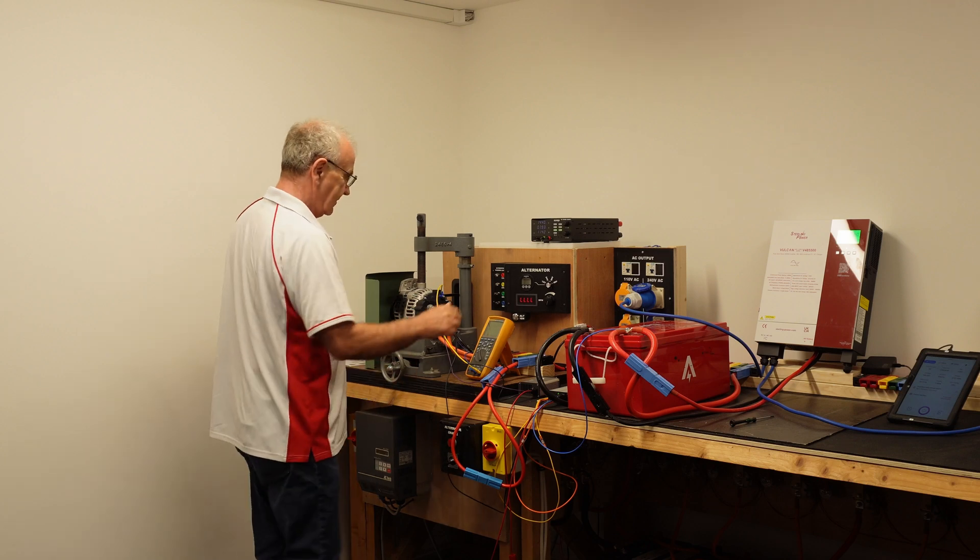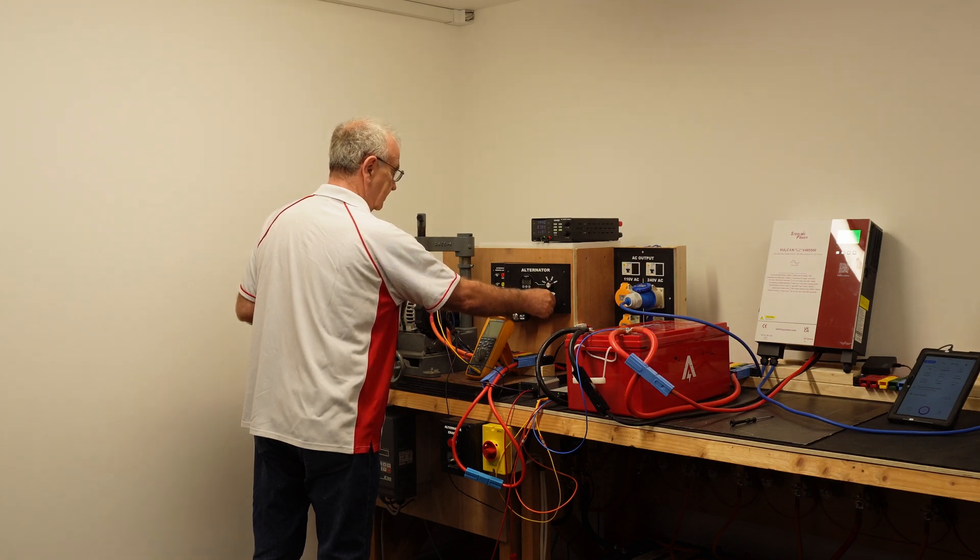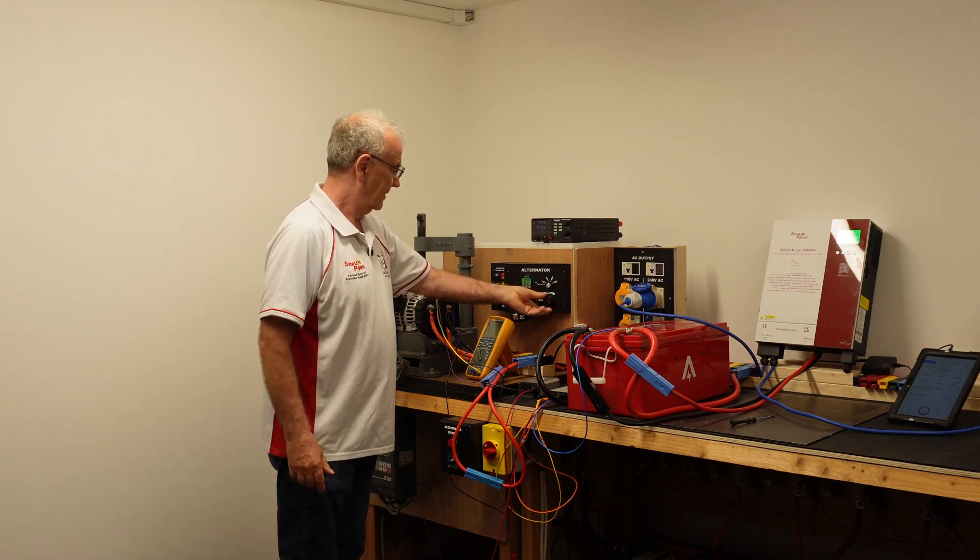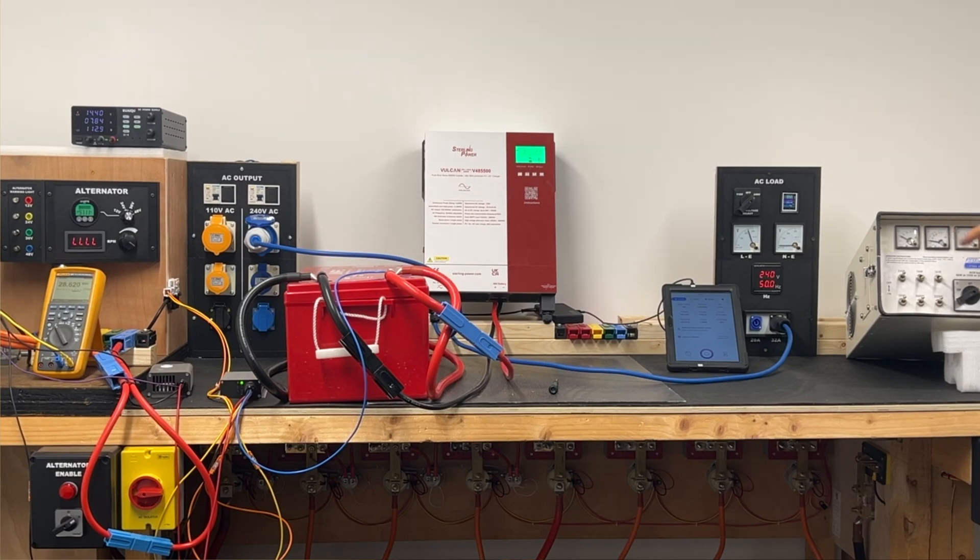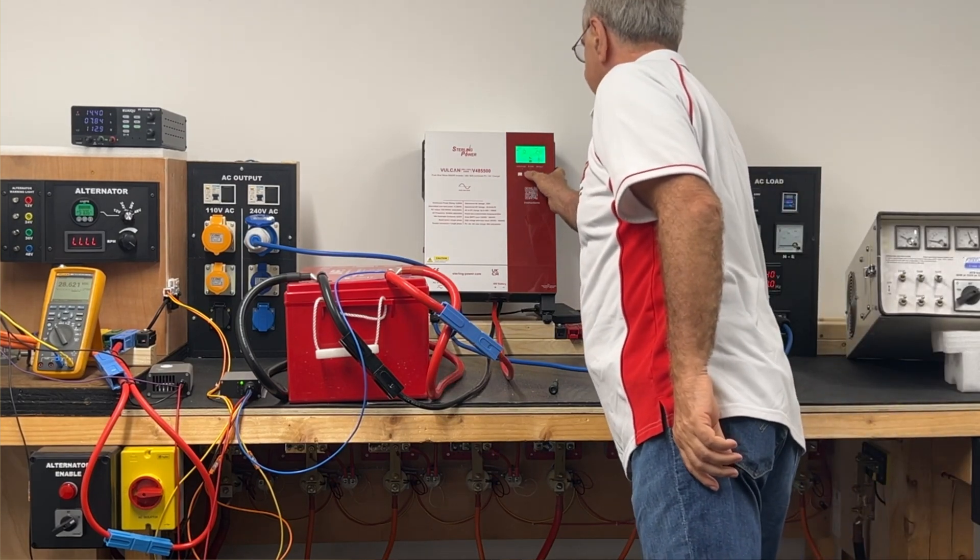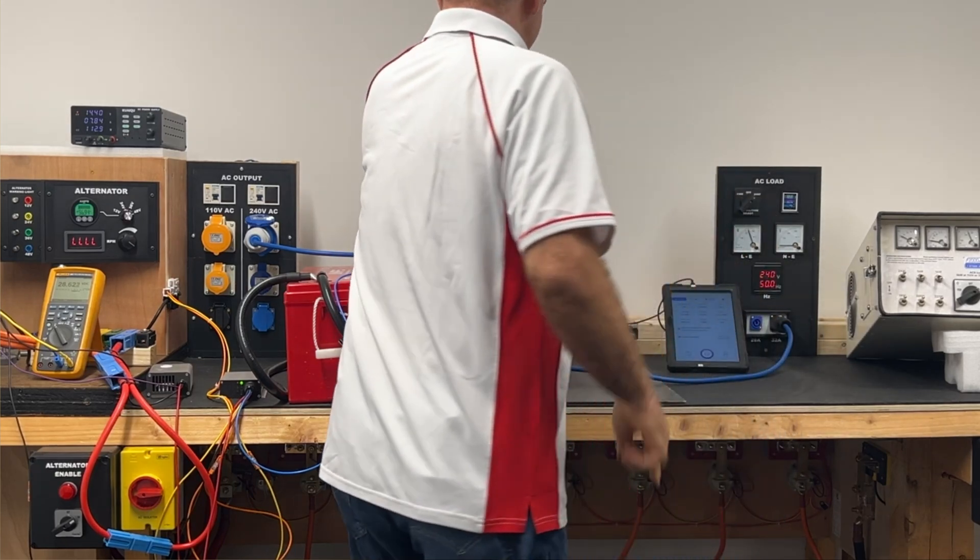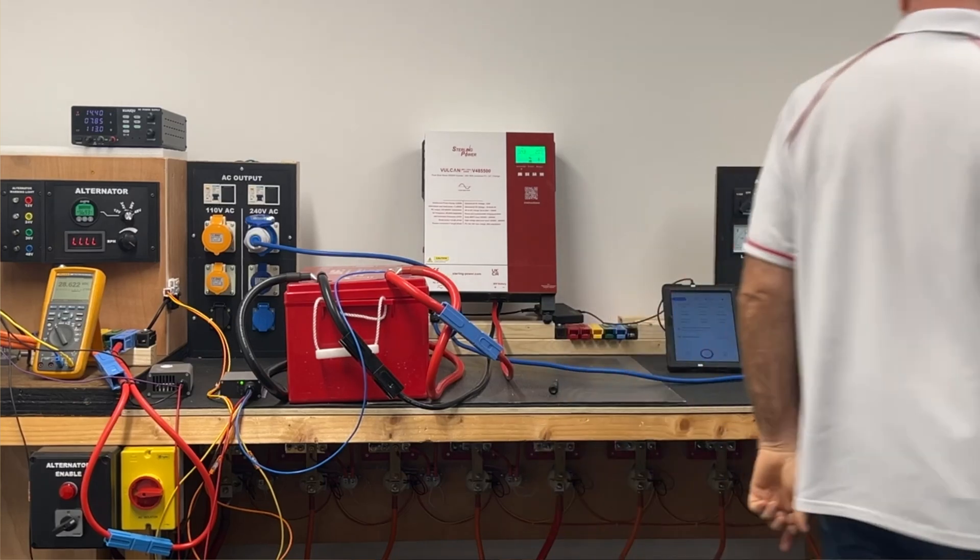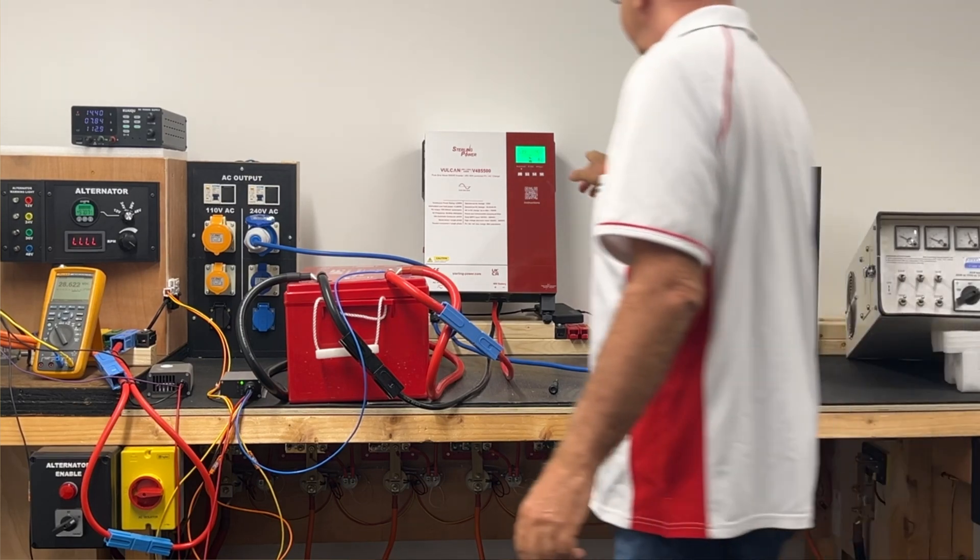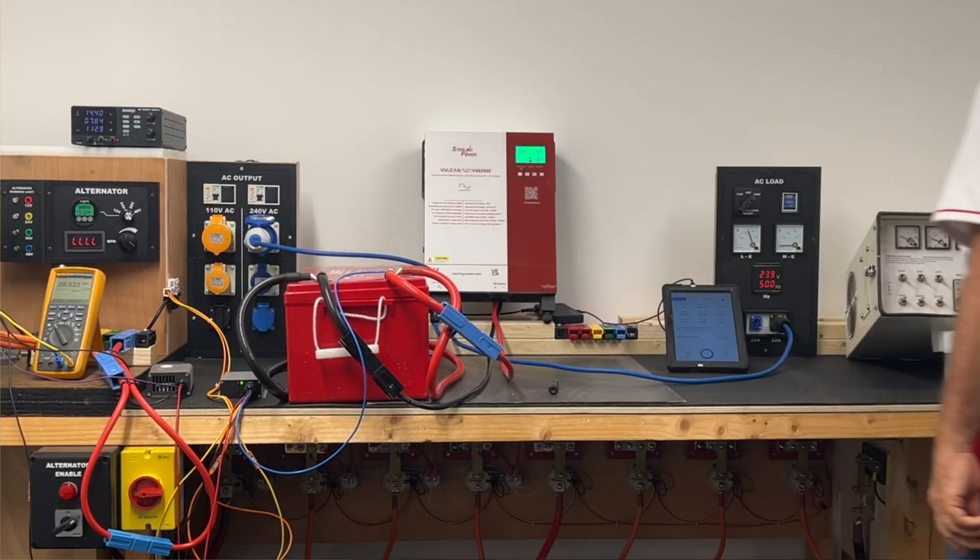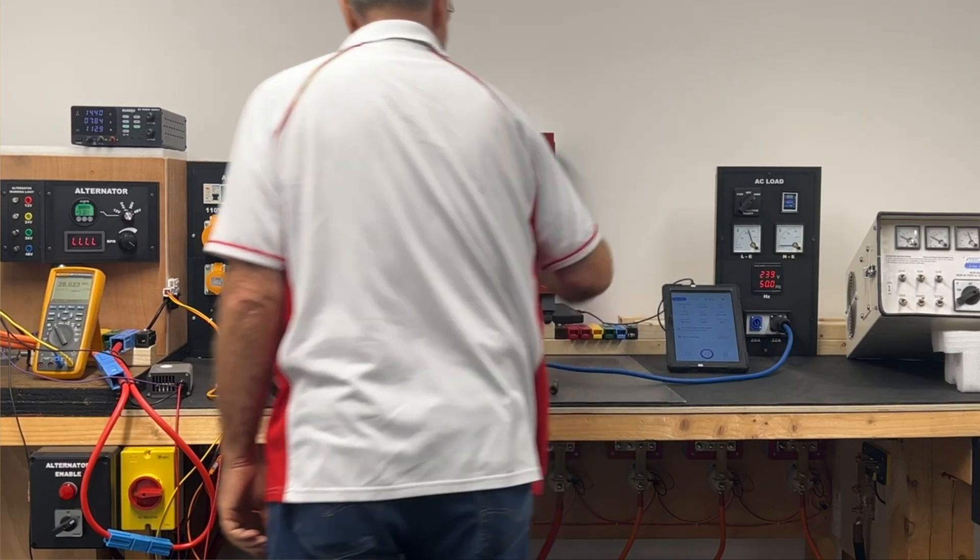Let's fire this up. 96 amps there. Over to here we have 2 kilowatts on here, and it says here 2 kilowatts on the inverter. That's 4 kilowatts. 4 kilowatts on the inverter. 5 kilowatts. 5 kilowatts on the inverter.